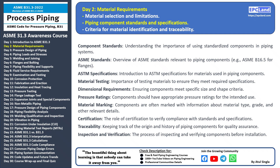Dimensional requirements are also vital — components must meet specific size and shape criteria to ensure proper fit and function within the piping system. Pressure ratings are crucial for safety; piping components should have pressure ratings that match the intended use of the system to safely handle the pressures they will be subjected to. Material marking is a common practice — components are often marked with information about the material type, grade, and other relevant details, helping in identifying and verifying components during installation and maintenance.